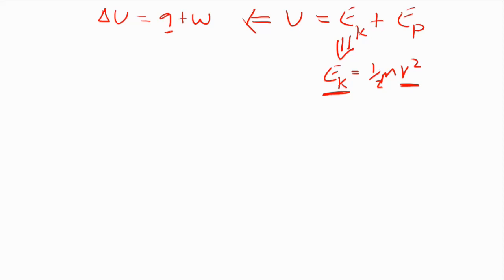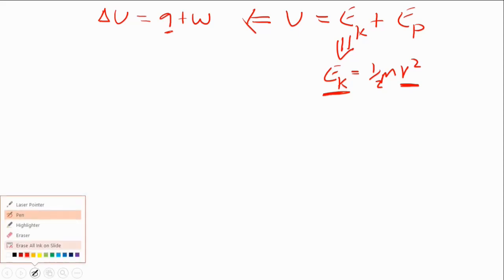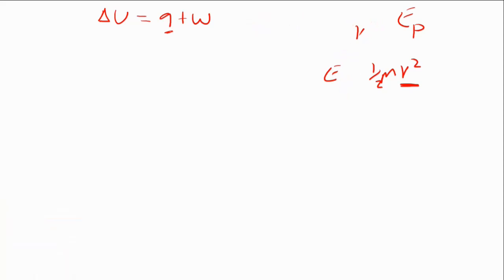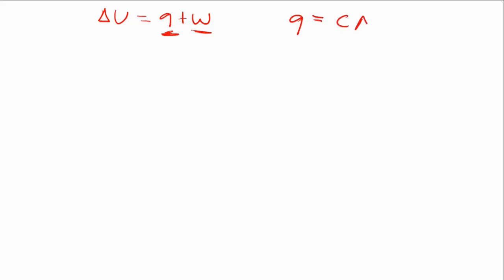That's basically a start to the first law of thermodynamics. Now, delta U is equal to Q plus W. How is it that a chemical system can do work? W is work, Q is the heat change. We know that Q is equal to C delta T. Mechanical work, W, is equal to force times distance.